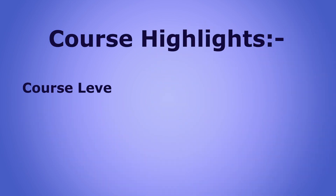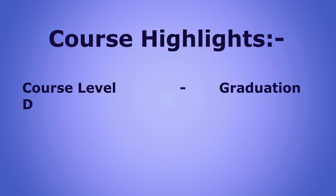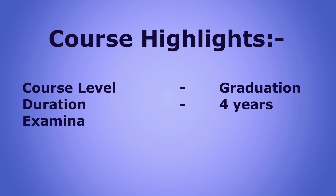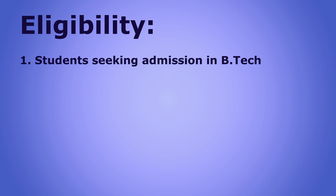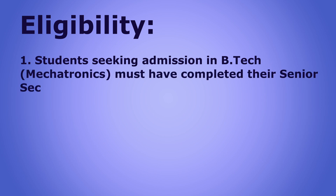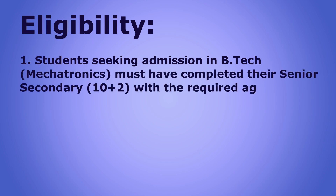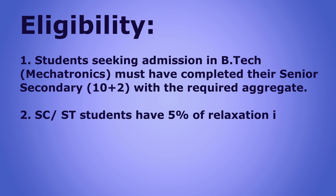The course highlight: the level of this course is graduation. The duration of this course is four years. The course type is a degree course, and the eligibility criteria is that you have to be at least 10+2. To take admission in B.Tech in Aeronautical Engineering, you must have completed your senior secondary school — that is 12th class — with a minimum of 50% aggregate. For SCs and STs, for Scheduled Caste and Scheduled Tribes, there is a 5% relaxation as well.